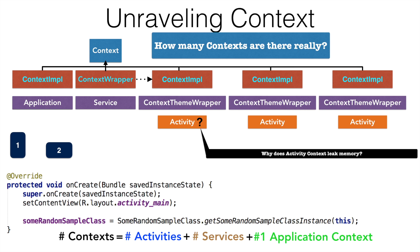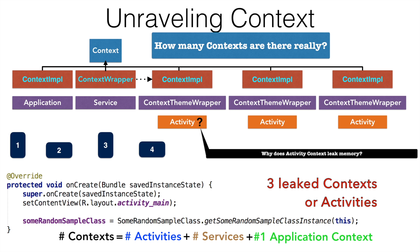When it was rotated to landscape mode, the earlier context was still there and a new instance of the activity would get created with a new context implementation. When rotated back to portrait, there would be three contexts; when rotated again, four contexts. So there are contexts living beyond their expected lifetime, while only one activity is actually visible — and that is why we were leaking memory when we passed 'this' to the singleton object.